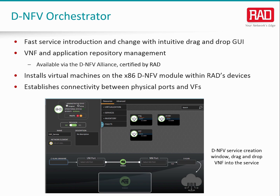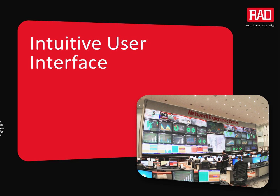The distributed NFV domain orchestrator for the network edge follows the ETSI MANO architecture and uses the OpenStack framework to manage the physical and virtualized resources required to effectively run distributed NFV. It installs virtual network functions such as routing, encryption, firewall, and more on Rad's vCPE devices. It also manages the repository of VNFs with data on vendor, usage, and system requirements for each. Service providers can download and provision multiple VNF services by simply selecting a vCPE, then dragging and dropping the virtualized function into the service.